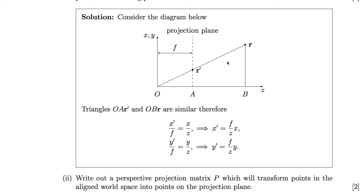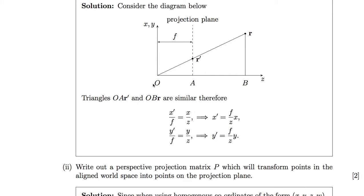The easiest way to do this is to draw a diagram. Here the viewing position is at the origin, the Z axis is horizontal, and the vertical axis denotes x or y. The projection plane is placed a distance f away from the origin along the Z axis. We draw a projector line from the origin through our projection plane to r. Where that line intersects with the projection plane is our projection point. The triangles OA–r-dash and OB–r are similar.